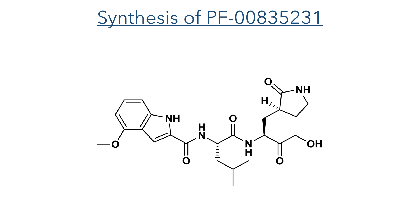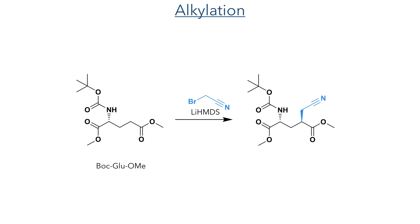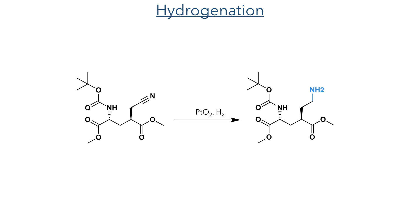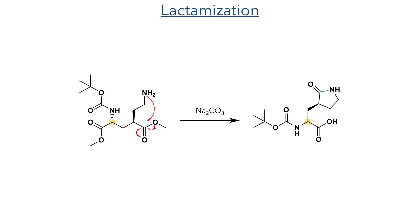So that's all the pharmacology — now let's look at the synthesis of this drug candidate. First, they started with a Boc-protected glutamic acid dimethyl ester and reacted it with bromoacetonitrile using lithium HMDS as a base. Catalytic hydrogenation using platinum oxide and hydrogen gas reduced the nitrile to an amine. Reaction with sodium carbonate promoted an intramolecular cyclisation to form the lactam ring.